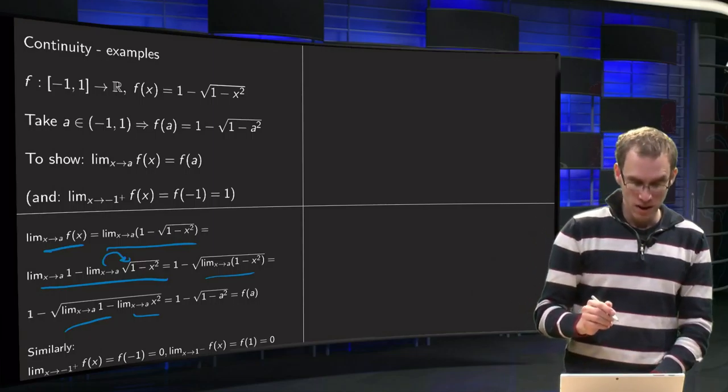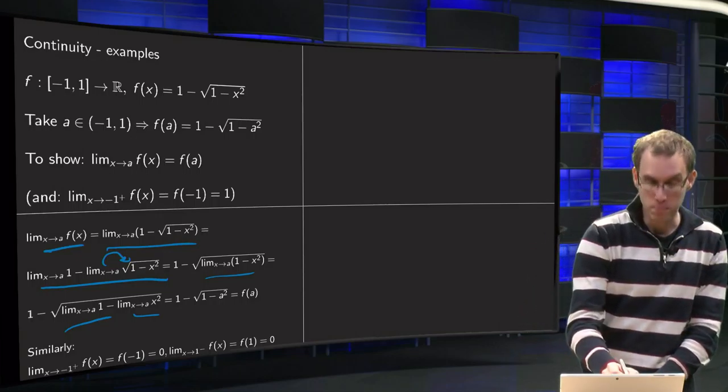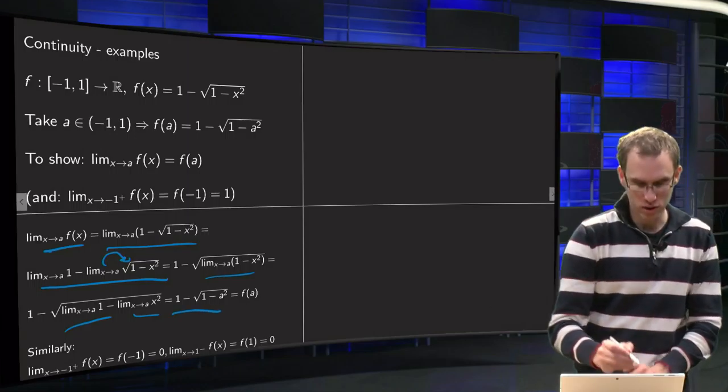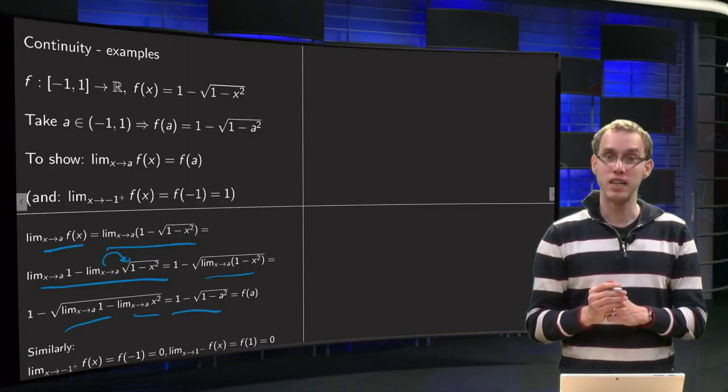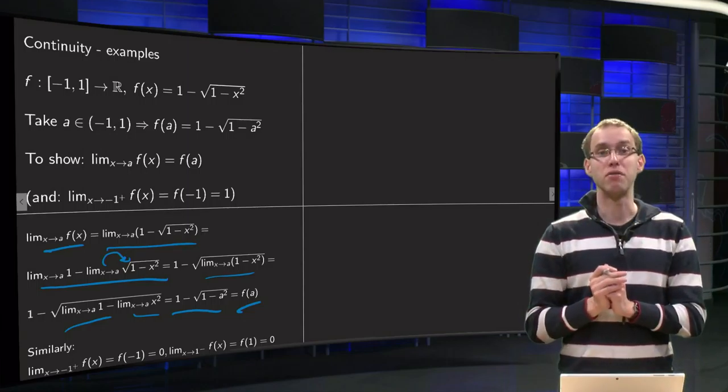Then we use again the sum law over here. So the limit of x to a of 1 minus x squared equals the limit x to a of 1 minus limit of x to a of x squared. And then we use the power law, for example.